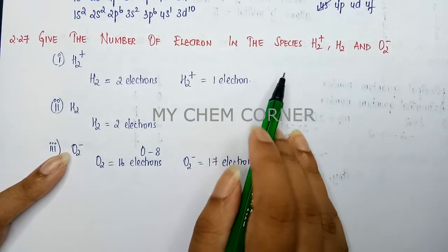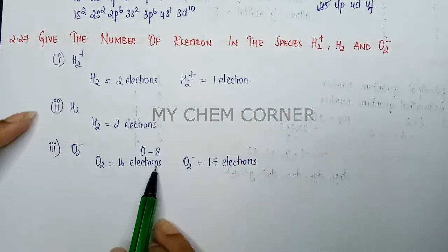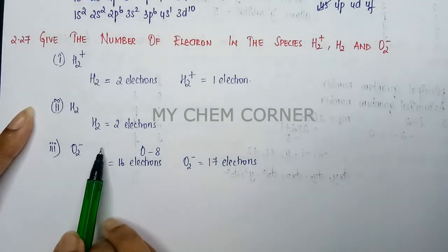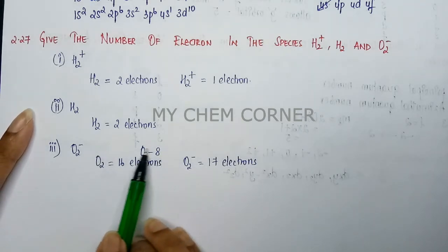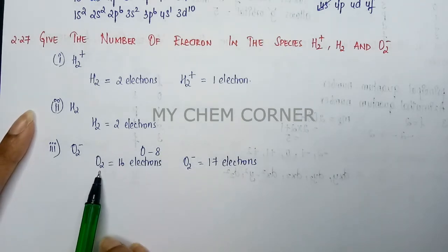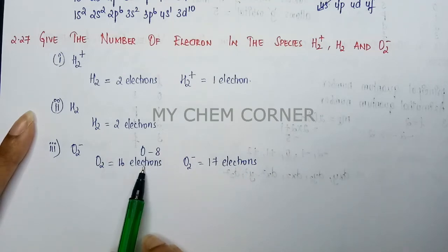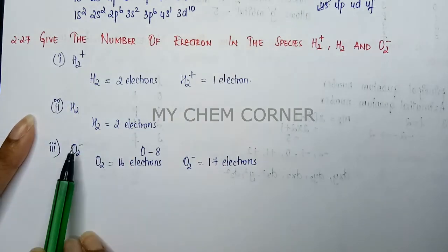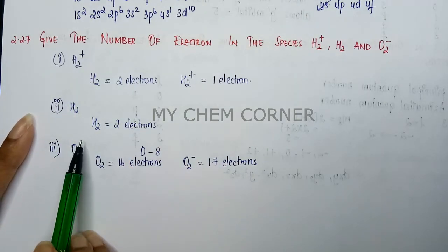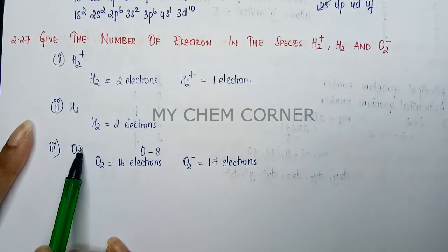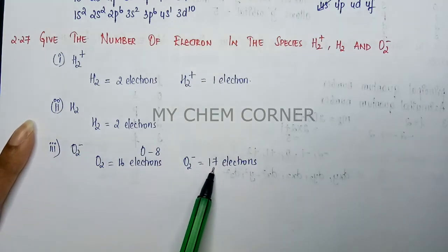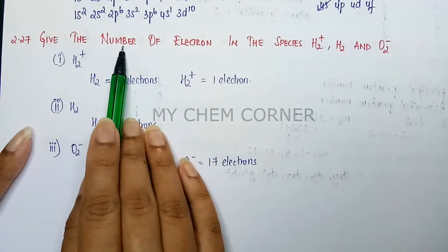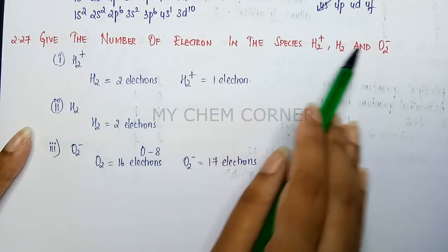This way, for any molecule given to you, you can find out the number of electrons by looking at their atomic numbers. If it's an atom, you directly write it. If it's a molecule, add the atomic numbers for each atom. Then check the charge: if it's positive, it's loss of electrons; if it's negative, it's gain of electrons. Accordingly change the number of electrons. This is an easy question where you just have to calculate number of electrons in these species.